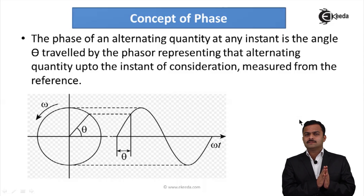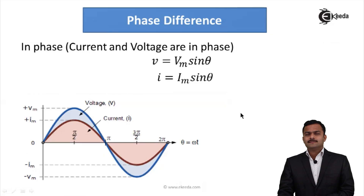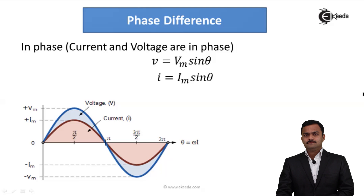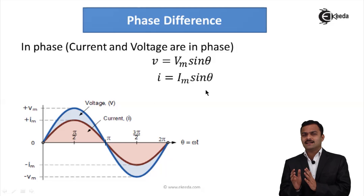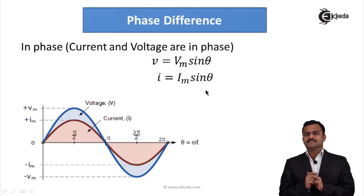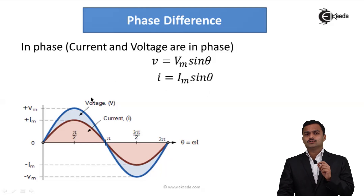The AC quantity may travel before the reference or it may start travelling after the reference. We normally consider the reference as θ equal to 0. Phase and phase difference are essentially the same meaning. Suppose I consider a reference V = Vm sine θ, where the phase is 0, and another quantity I = Im sine θ. Both V and I have φ = 0, meaning V is starting from 0 and I is also starting from 0, so the phase difference between them is 0.